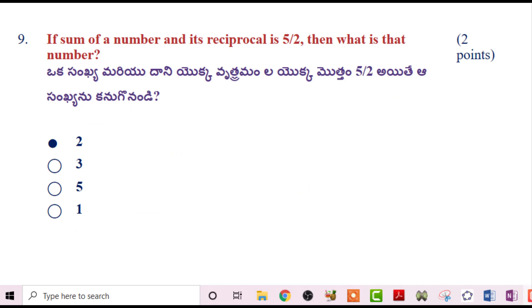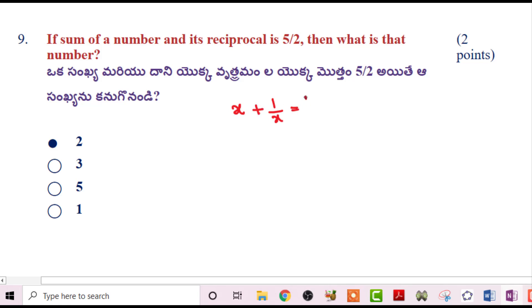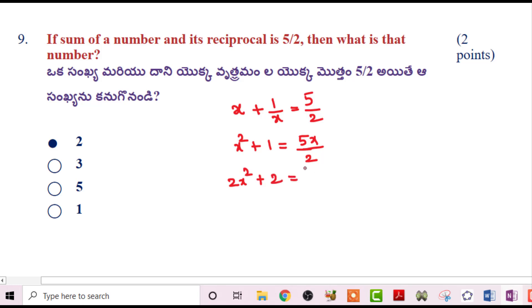Next problem: The sum of a number and its reciprocal is 5/2. Let the number be x and its reciprocal be 1/x. So x + 1/x = 5/2. Multiplying through by x: x² + 1 = 5x/2. Multiplying by 2: 2x² - 5x + 2 = 0.